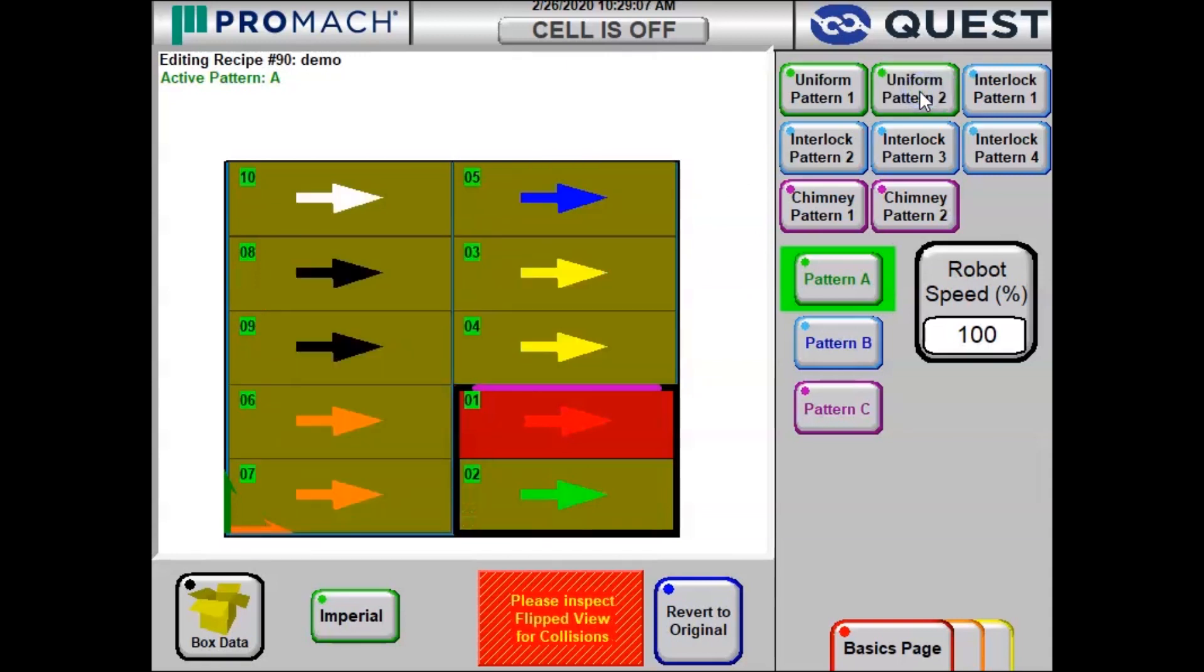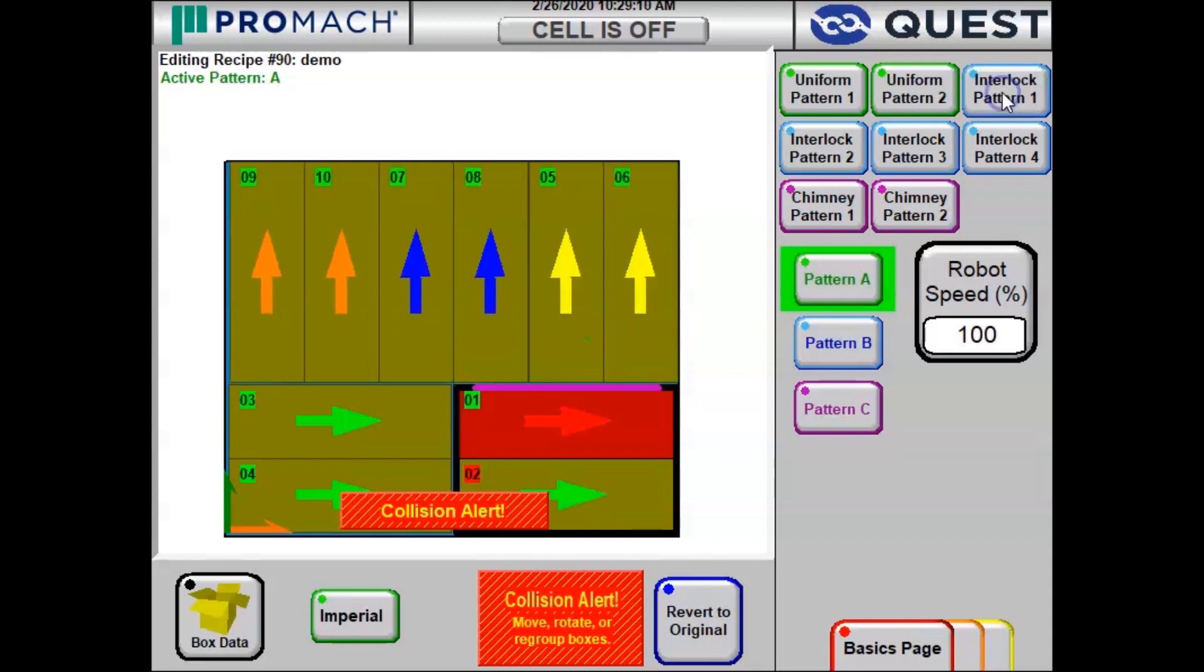So I think we are going to go for an interlock pattern. And this is looking pretty good. But let's say box number 9 and 10 have special labels on the right side of the box that we need to flip to the outside.